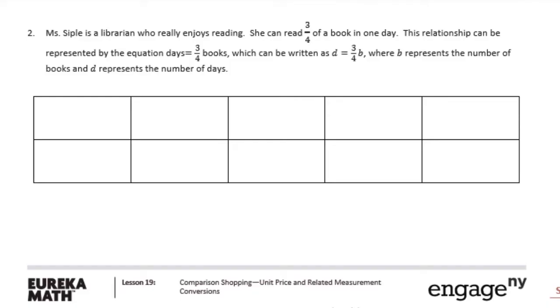Number 2. Mrs. Seiple is a librarian who really enjoys reading. She can read 3 fourths of a book in one day. This relationship can be represented by the equation days equals 3 fourths books, which can be written as d equals 3 fourths b, where b represents the number of books and d represents the number of days.